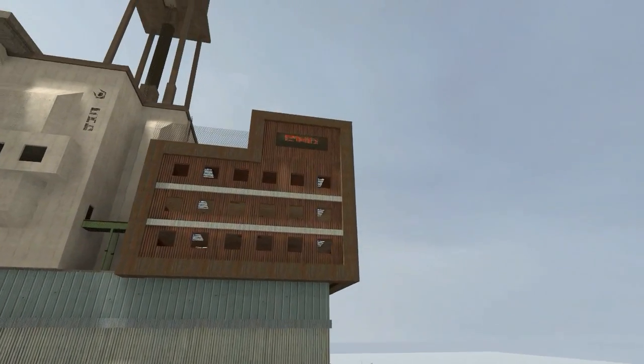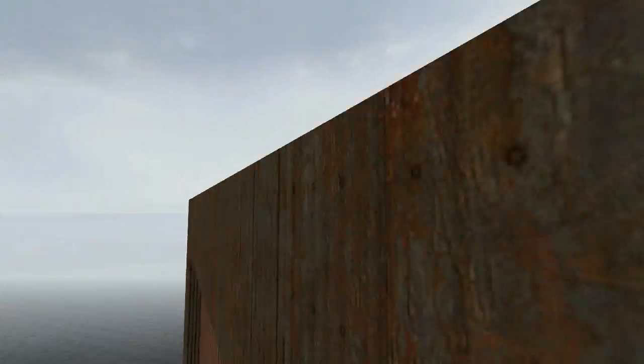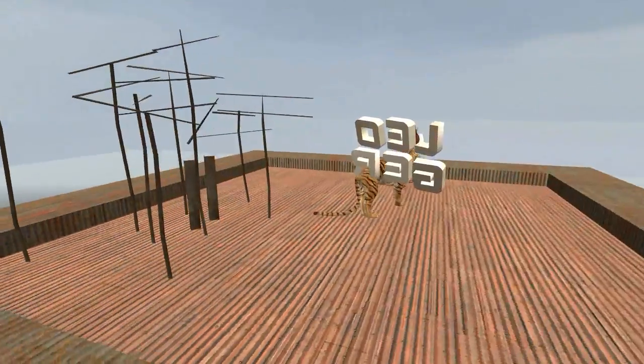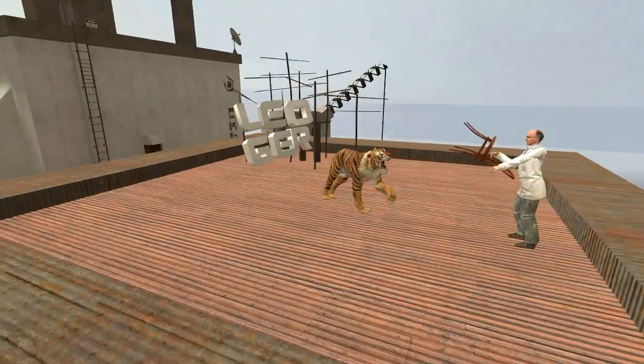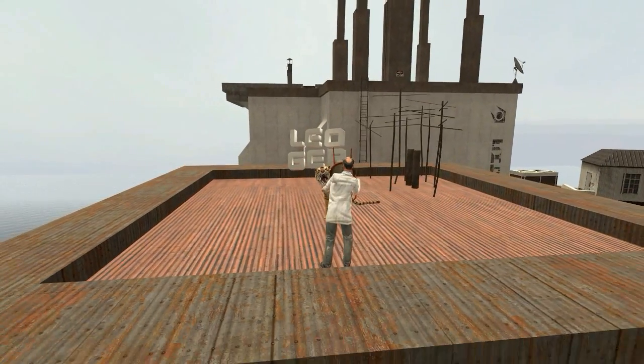So OIL RIG stands for oxidation is loss of electrons and reduction is gain of electrons. And LEO GUR is loss of electrons is oxidation and gain of electrons is reduction.